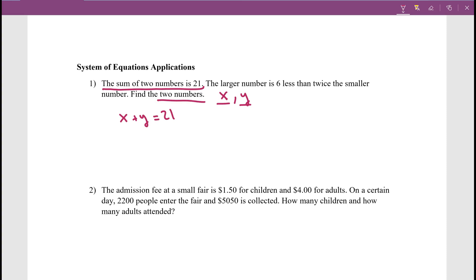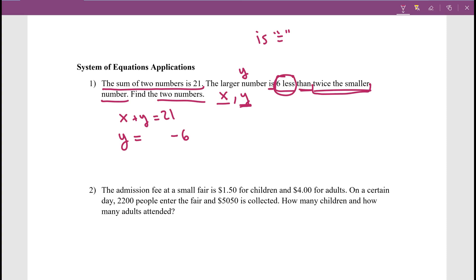Now, what does it say about the larger number? We don't know which one is larger, so let's pick one. Let's say y is the larger number. Whenever you see the word 'is,' it means equals. The larger number y is six less than twice the smaller number. Whenever you see 'six less,' it means you subtract six from the original — so it's not six minus that number, it's the original minus six. The original here is twice the smaller number. If y is the larger number, then x is the smaller number, so twice the smaller number is 2x. So the larger number is six less than twice the smaller: y equals 2x minus 6.